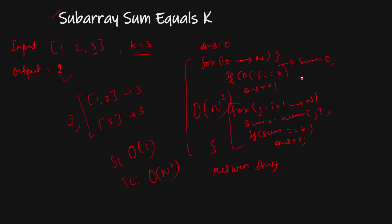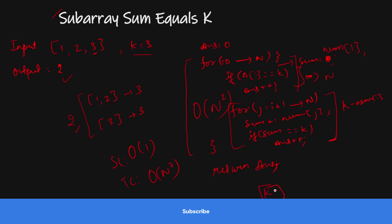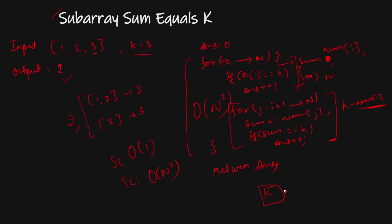To improve, notice that at each index i, our current sum starts as nums[i]. We are looking for k minus nums[i] — the remaining sum needed to reach k. Currently we find this in O(n), but can we find it in O(1)? Yes, we can do this using a hashmap.